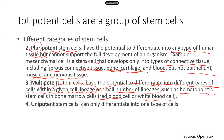And then the lowest tier — that's the unipotent stem cells. 'Uni' means one, so these cells can only differentiate into one type of cell. Like skin cells make skin cells, muscle cells make muscle cells.